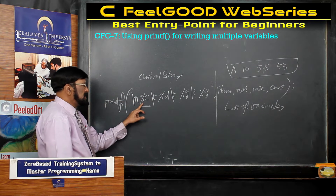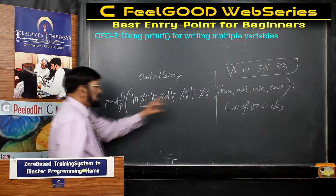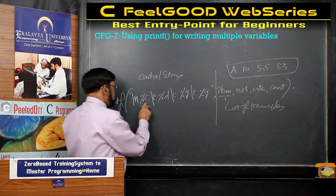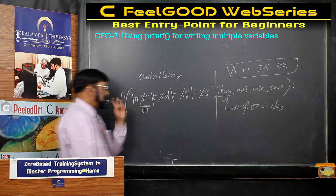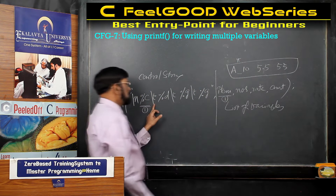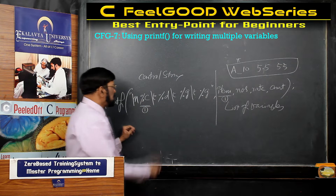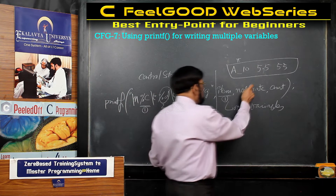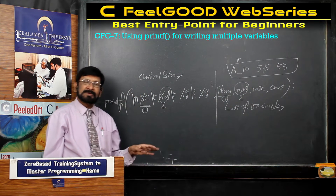Now, percentage C you have written here — that means you want to print a character. What is the corresponding item? Where your character is stored — that is the matching one. Should be perfectly matched. Next, you want a tab, that's why horizontal tab we have written. Thereafter, what you are expecting — weight — you are writing percentage G. That is the third one, and the corresponding variable is the third one.